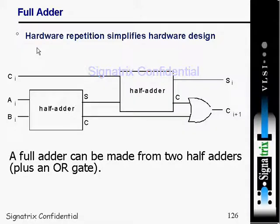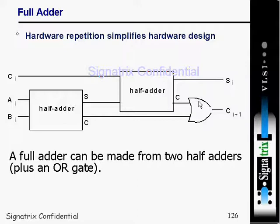Now suppose you want to implement a full adder using two half adders. The first half adder takes inputs Ai and Bi, producing sum S and carry-out. That sum S acts as an input for the second half adder, with carry-in as the other input, giving you Si and a carry-out from the second half adder.